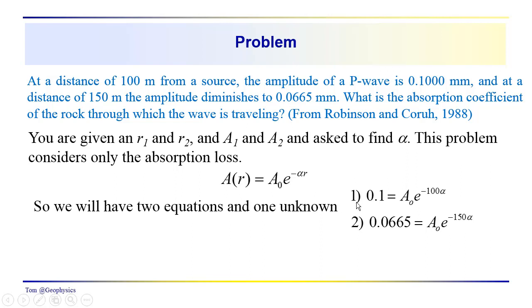But basically we have two equations and one unknown. The unknown is R alpha, and these would be the two equations because we have the amplitudes at these two distances. So we know that 0.1 is equal to A0 e to the minus 100 alpha, and a second equation here, 0.0665, and these are in units of millimeters, is equal to A0 e to the minus 150 alpha. We have meters up here and millimeters here. Is that a problem?